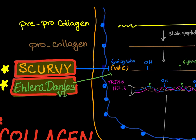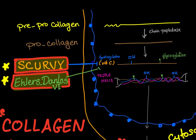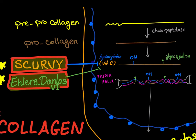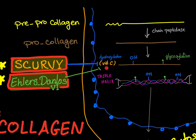Pro-collagen undergoes three processes. First is hydroxylation — the hydroxylation of selected prolines and lysines — which requires vitamin C as a cofactor. Second is glycosylation — glycosylation of selected hydroxylysines.